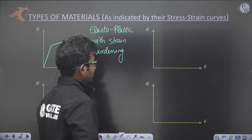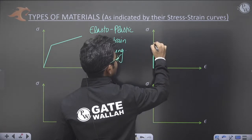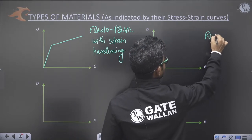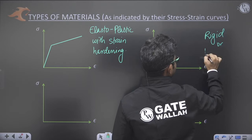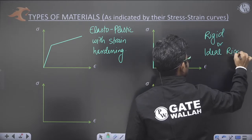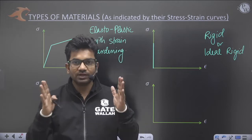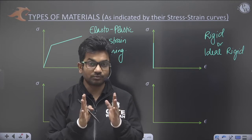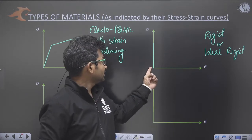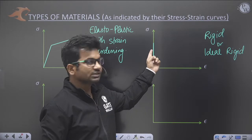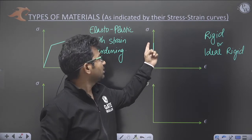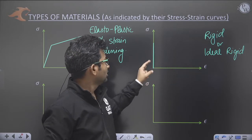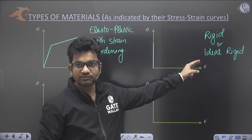The next behavior is called ideal rigid or simply rigid. If we apply forces, stresses keep increasing but there is zero deformation. Here, with increasing stress, there is zero increase in strain. This type of behavior is called rigid or ideal rigid behavior.